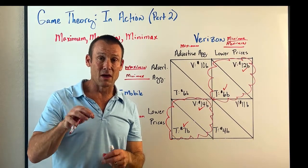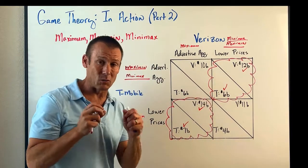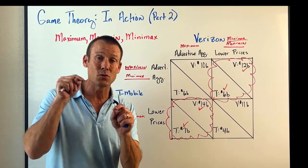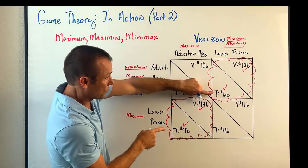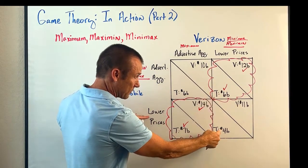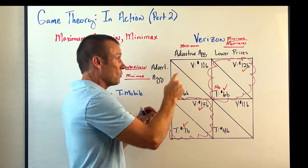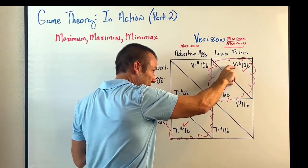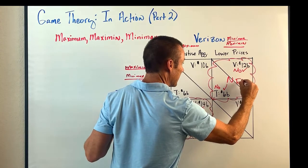Now let's check the Nash equilibriums. Looking at the first outcome: given Verizon played lower price, would T-Mobile benefit from switching away from advertising aggressively? The answer is no. And given T-Mobile played advertise aggressively, would Verizon benefit from switching from lower price to advertise aggressively? Going from $12B to $10B — the answer is no. That is a Nash equilibrium.